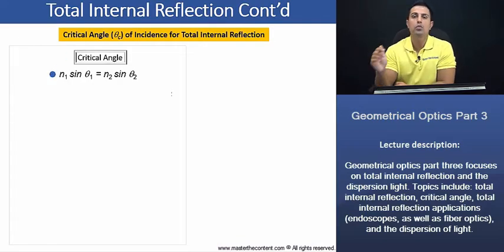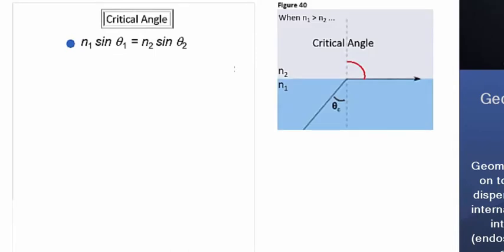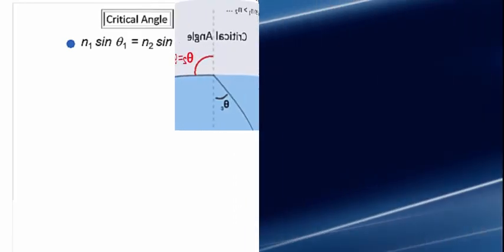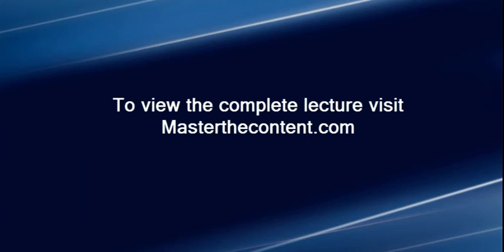We'll begin up here with Snell's law. Now, when the critical angle is reached, the refracted ray is parallel to the surface, and the refracted angle is going to be 90 degrees.